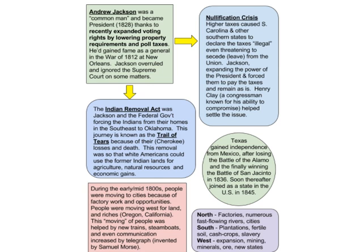Texas gained independence from Mexico after losing the Battle of the Alamo but winning the Battle of San Jacinto in 1836, joining as a state in 1845. During the early-to-mid 1800s, people moved to cities for factory work and west for land and riches. This movement was helped by new trains, steamboats, and the telegraph invented by Samuel Morse. Every new canal, train, or steam engine invention expedited travel, made communication easier, and caused prices to go down.